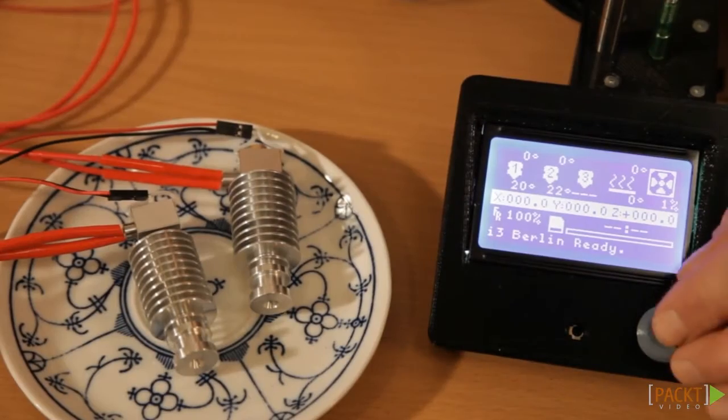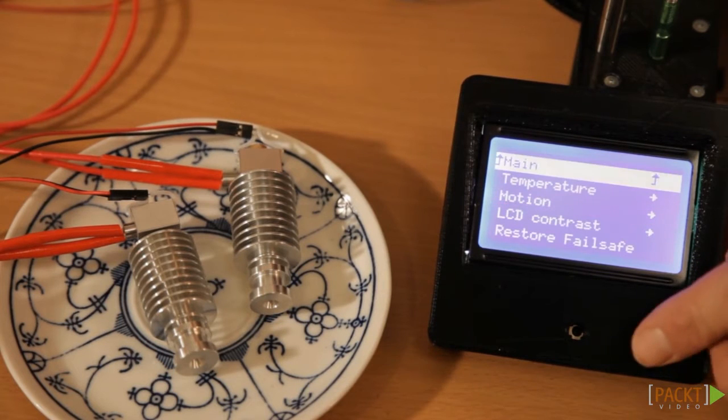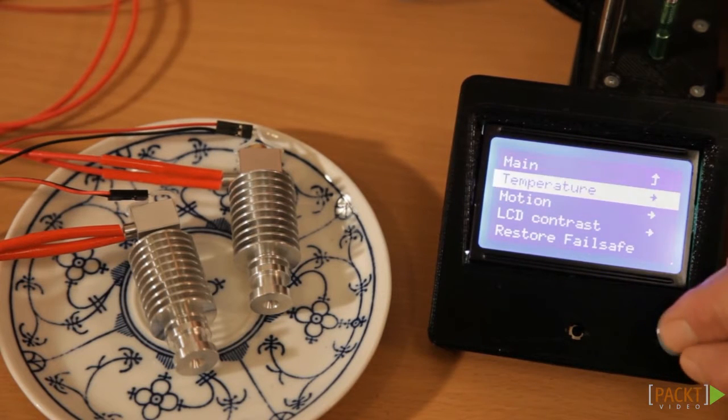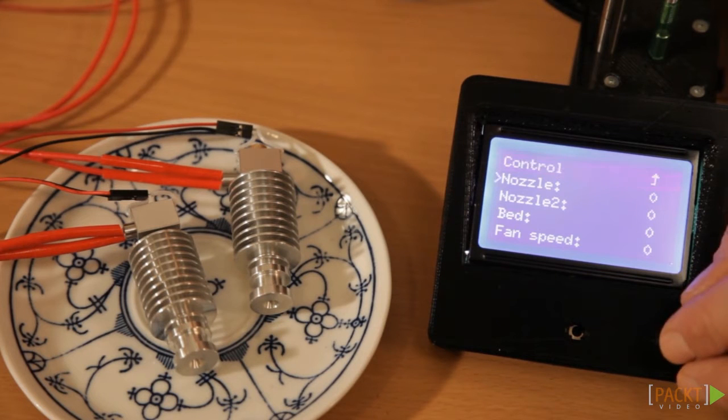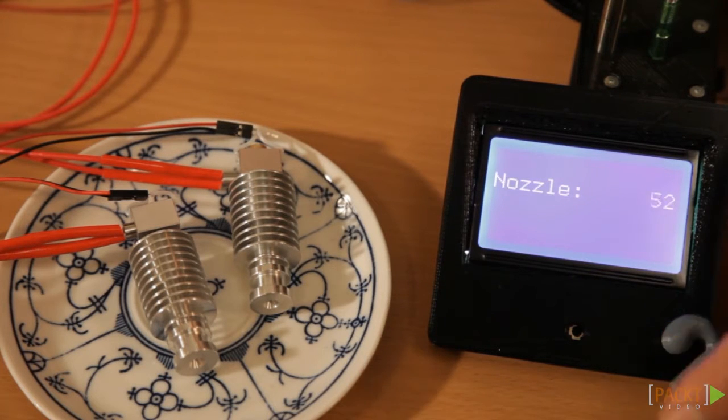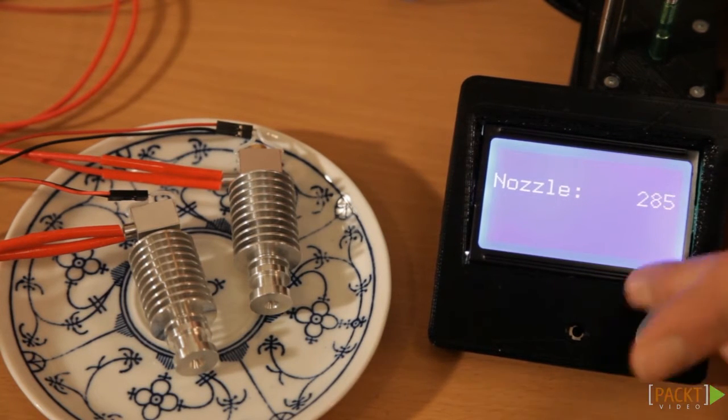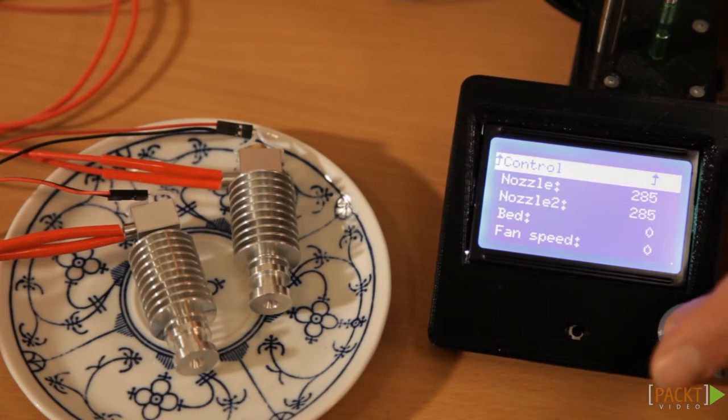Lay the hot end on something heat resistant, a porcelain plate for example. Turn on the printer. Heat up the extruder to 285 degrees or more and wait a few minutes.